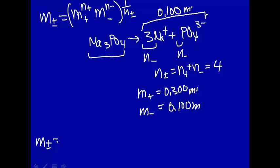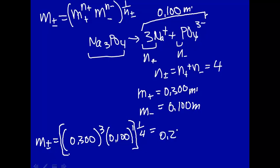So I think we have everything here that we need to calculate M plus minus. So M plus minus is equal to M plus, that's 0.300, raised to the N plus, which was 3, M minus, which was 0.100, raised to the first power, and this whole thing is taken to 1 over N plus minus, which is 4, 1 fourth. We put that in our calculators and we get 0.228.